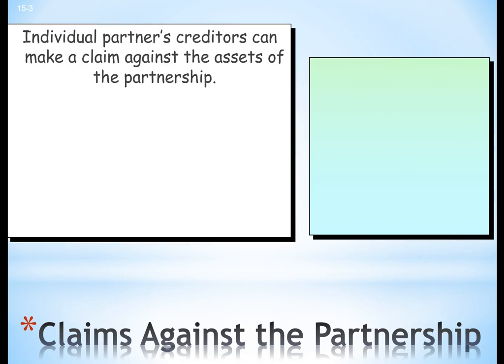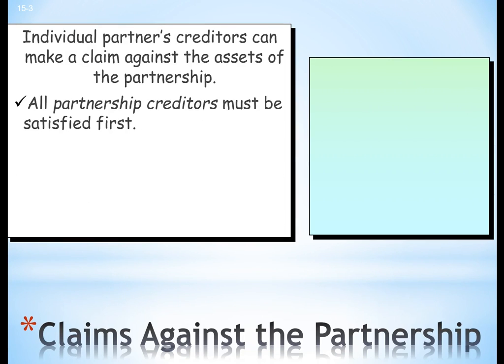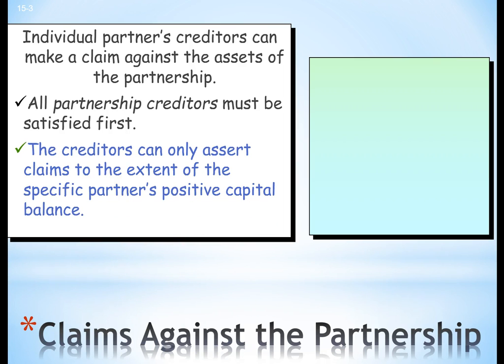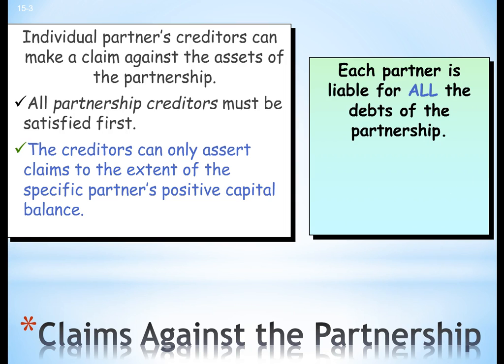Individual partner creditors can make a claim against the assets of the partnership. All partnership creditors must be satisfied first. The creditors can only assert claims to the extent of a specific partner's positive capital balance.